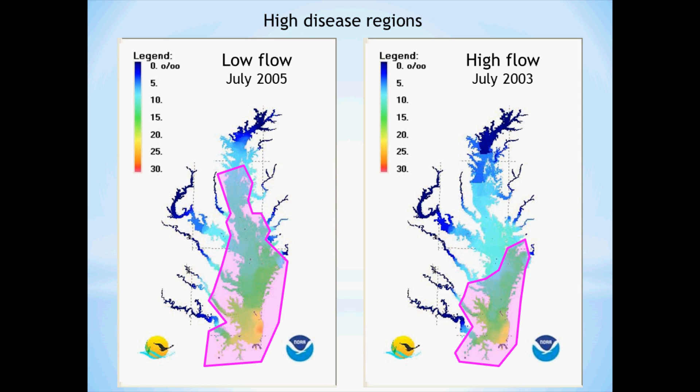Here are maps of Chesapeake Bay with different salinities in a low flow year on the left and a high flow year on the right. On the left, the pink region indicates where there's high disease mortality for oyster adults. On the right, in a high flow year, the fresh water pushes the salt out of the bay, reduces salinity, and makes this region of high disease mortality for adult oysters much smaller.